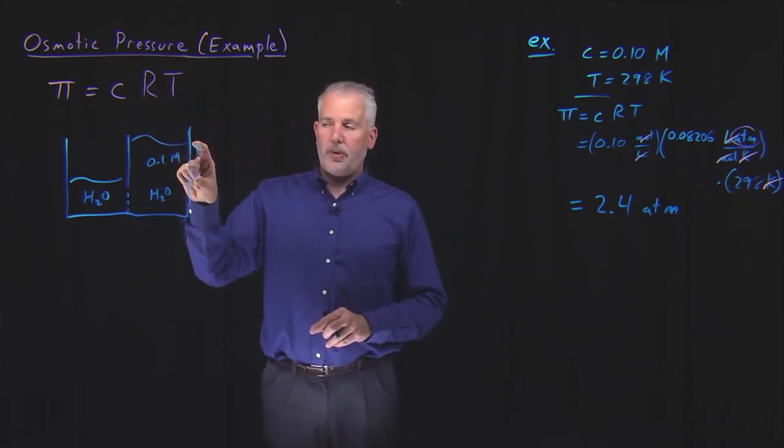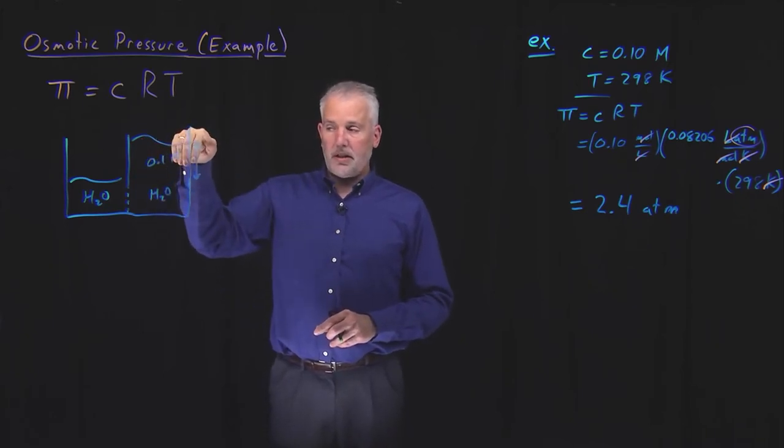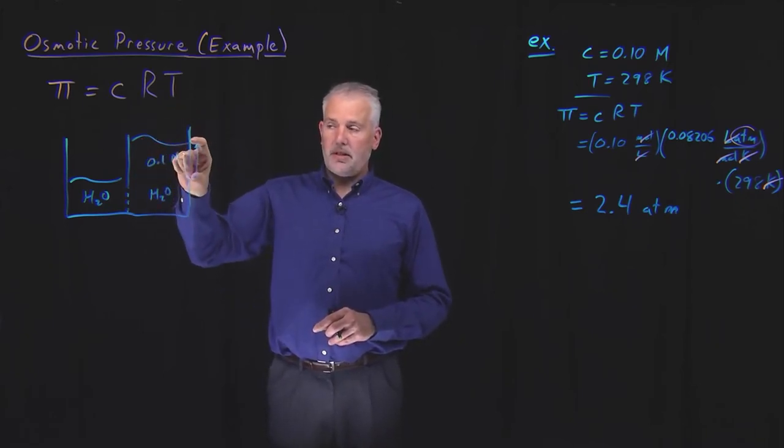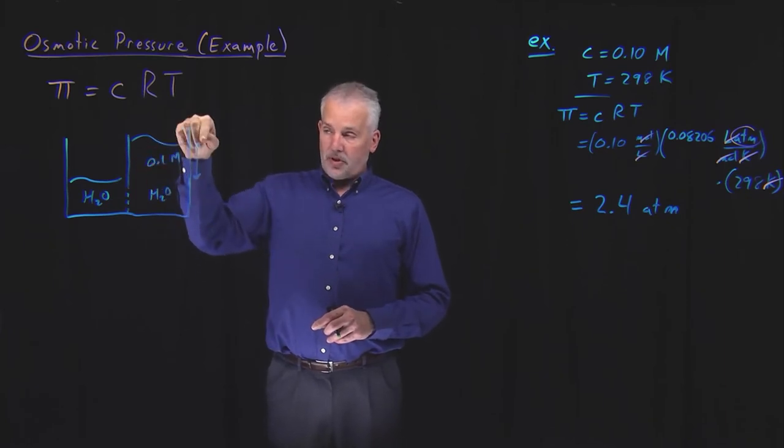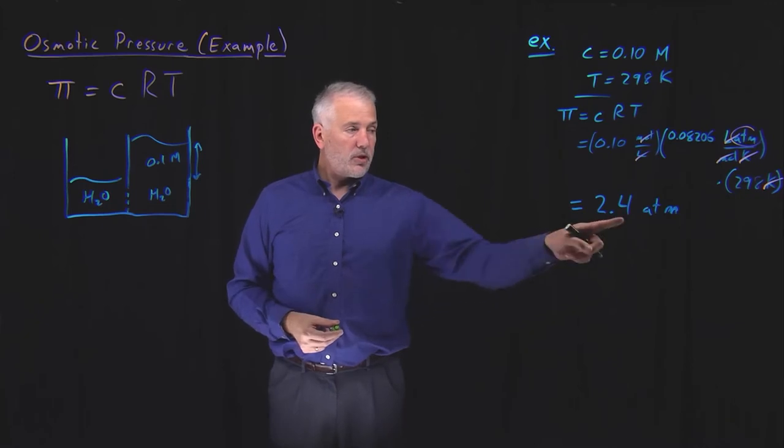So either we can think of it as this, the height of this column of solution weighs its mass, force generated by its mass, MGH, divided by the area, that pressure is equal to 2.4 atmospheres.